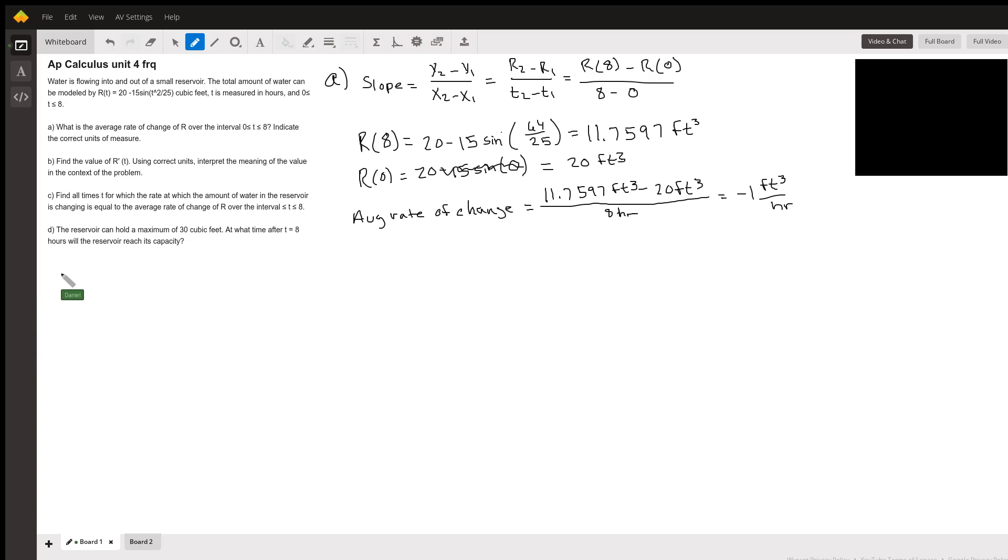Okay, let's go to part B. Find the value of R prime of T using correct units and interpret the meaning of the value in the context of the problem. So we're just going to need to find the derivative of our function here. So taking the derivative of all the parts, first the derivative of 20, which is 0, so I'm not going to write that.